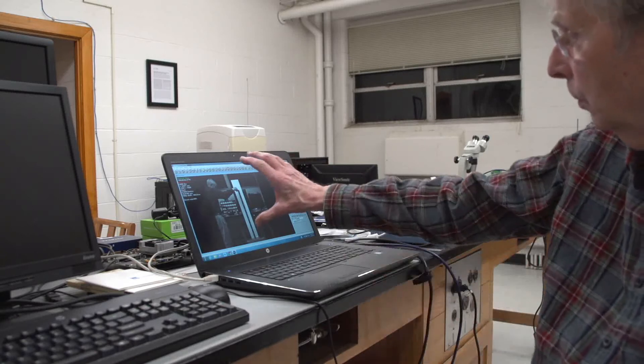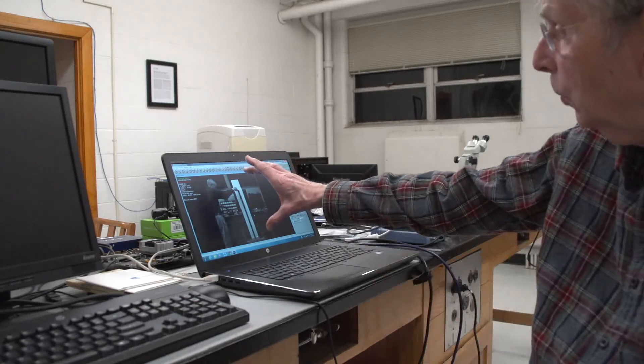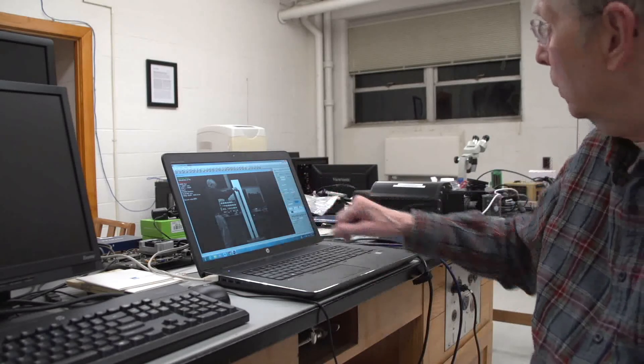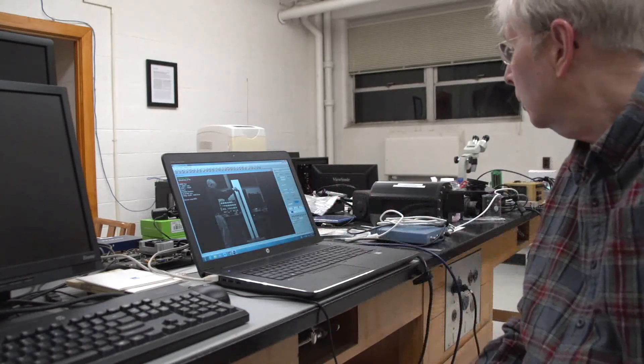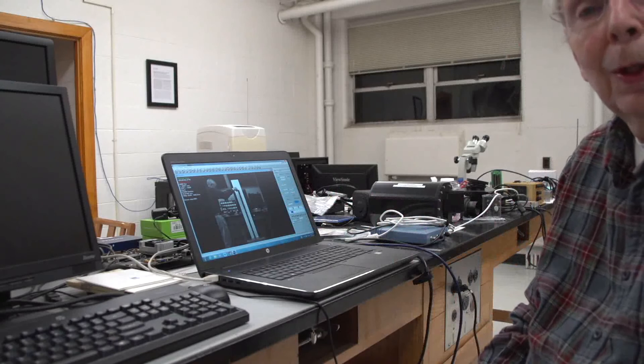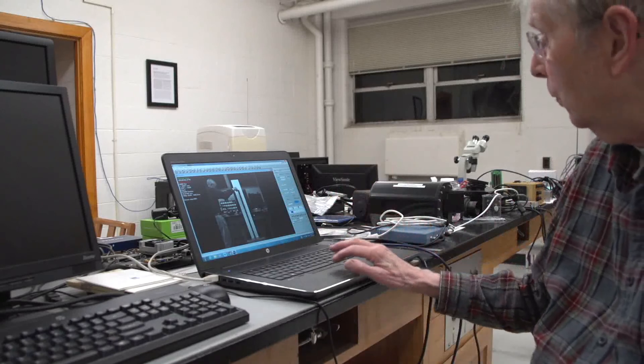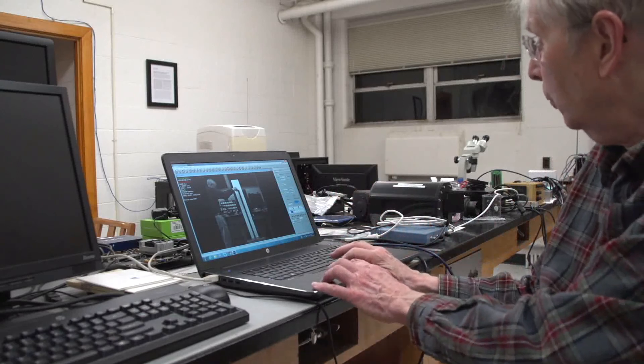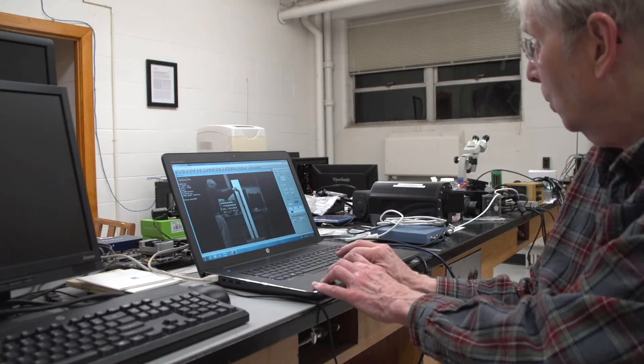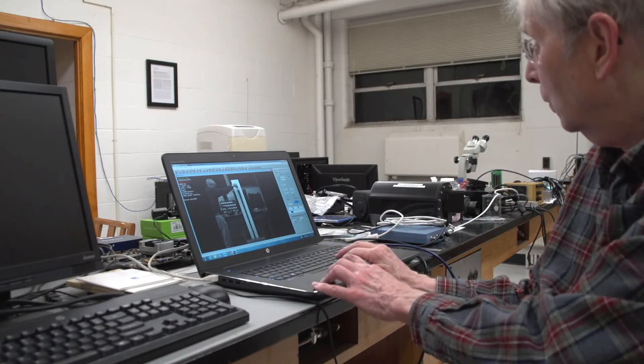You can see this is the first frame that we're going to save. There are about 2,000 images at 2,000 frames per second. It all happens really fast. I can scroll through those just by putting my mouse over this little index here